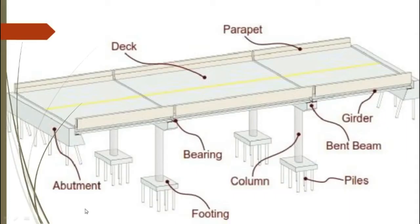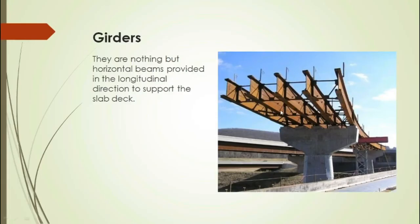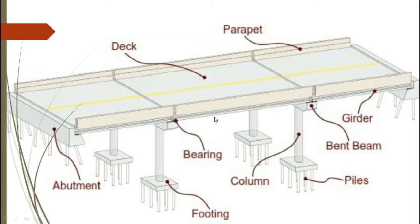This is a typical view of a bridge. As we have discussed, the deck along with the girders on which it is supported — these are the girders — and the bearing together form the superstructure part of the bridge. These are the abutments, which are the end supports to the bridge. The abutments along with the piers — these are the piers or columns, which are the intermediate supports to the bridge — form the substructure part of the bridge. And these are the foundations on which the piers rest.